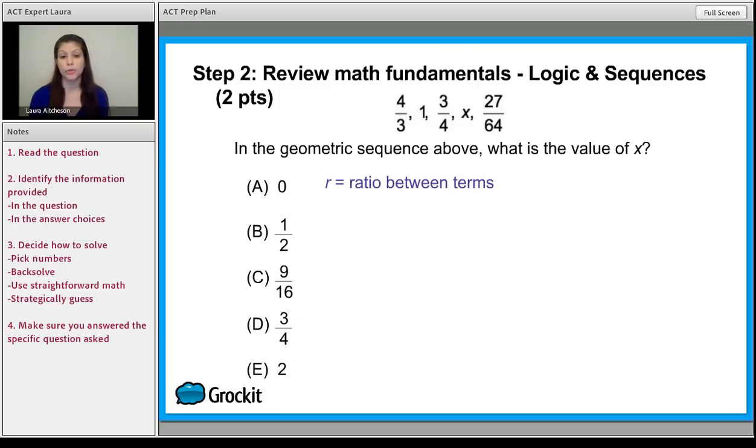So how would we find R? We can actually take two of the terms and we can say that something was multiplied to get the next term. So one term multiplied by the ratio between terms gives you the next term.